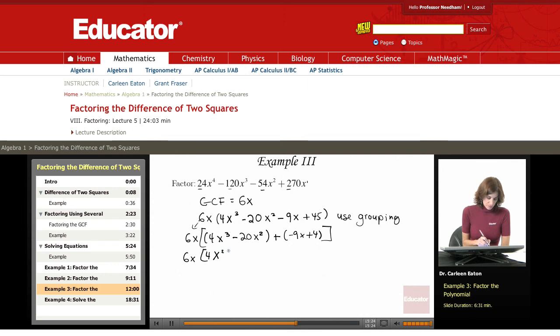So, pulling that out is going to give me x minus 5. So, I'm left with x minus 5.